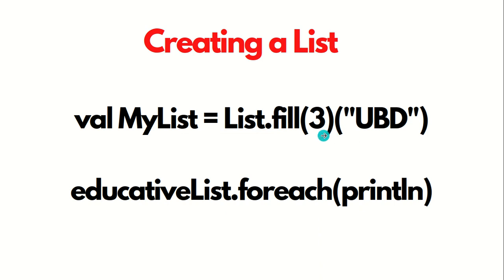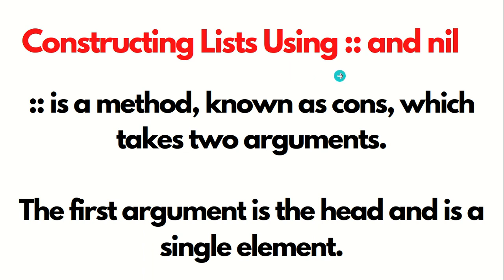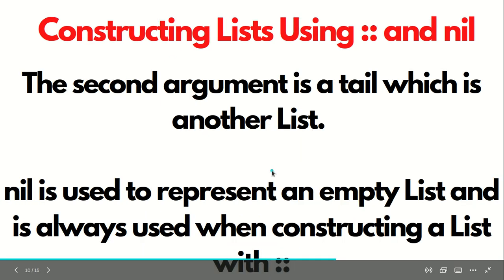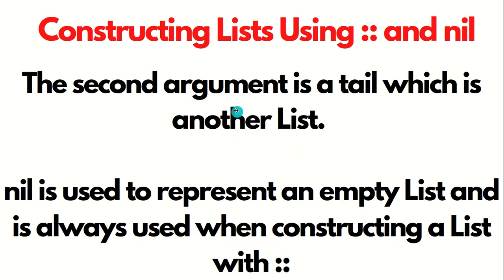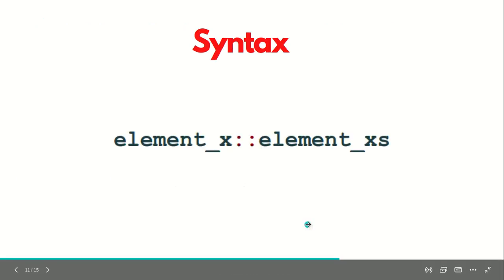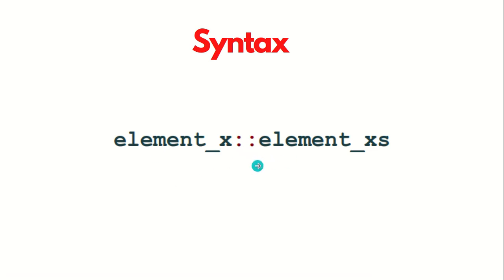We can also create a list using the fill method, where specifying 3 means 'ubd' will be filled 3 times into myList. We can also construct a list using double colon and Nil. Double colon, also known as cons, takes two arguments: the first is a head (a single element) and the second is a tail (another list). In Scala, head means a single element and tail represents all the remaining elements except the head. Nil is used to represent an empty list and is always used when constructing a list with double colon.